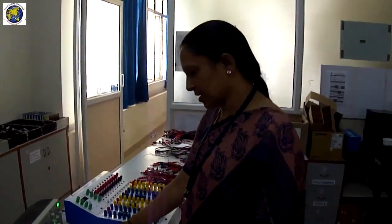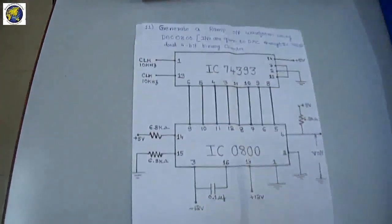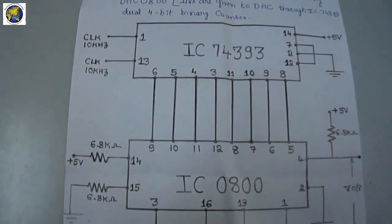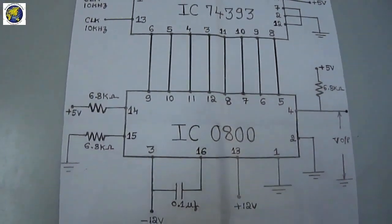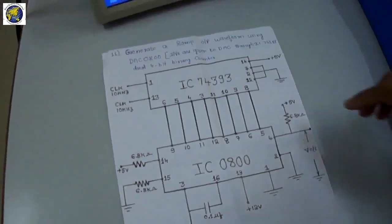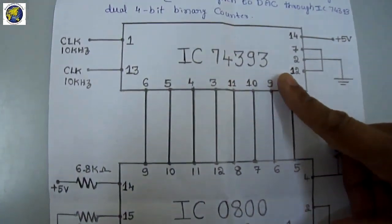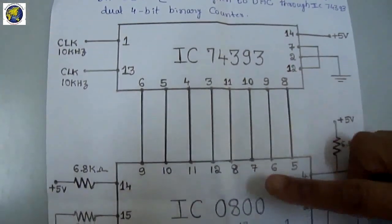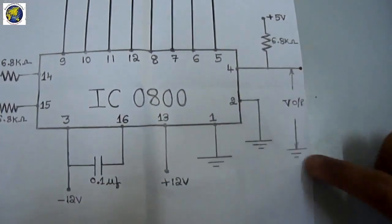Good morning. Today I am going to demonstrate a DAC experiment using the IC DAC 08000. This is the circuit diagram of the DAC IC. The inputs are given to the DAC through the 74393 IC, which is a counter IC. The output is obtained across pin number 4 of the DAC and ground.